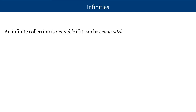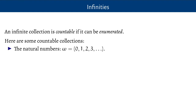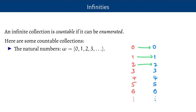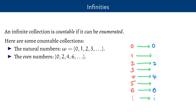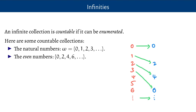We're going to use the concept of an enumeration to define what it is for an infinite collection to be countable. An infinite collection is countable if there's a way to enumerate its members. The most basic example we've already seen is the collection of natural numbers themselves — they are self-enumerating: 0, 1, 2, 3, 4, 5, 6, etc. That set Omega is itself enumerated by itself. If I look at the smaller collection of the even numbers, I can enumerate them too — I just need to use a different function to pick out an even number at each stage.